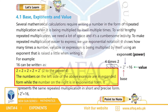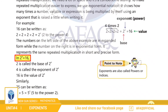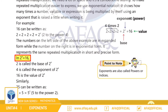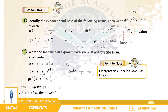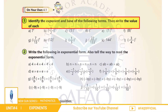2 multiplied by 2 — تو اس کو ہم اس طرح لکھ سکتے ہیں کہ 2 to the power of 4۔ اس طرح 2 ہمارا base ہوگا، 4 exponent یا power ہوگا، اور 2 to the power 4 کی value ہے 16۔